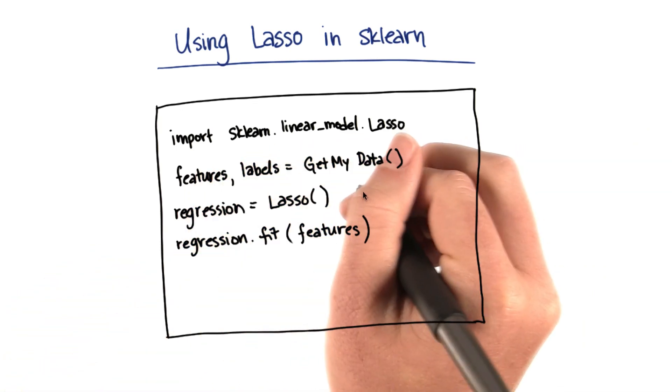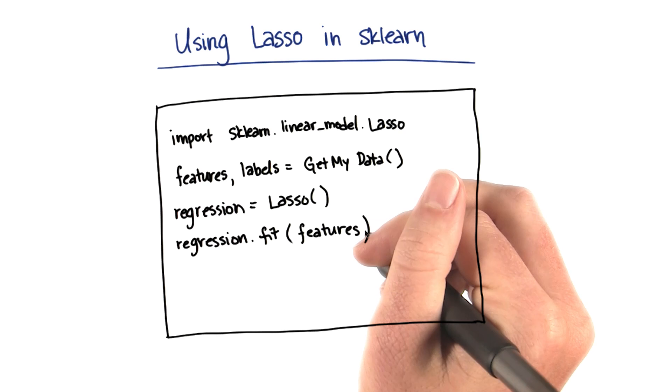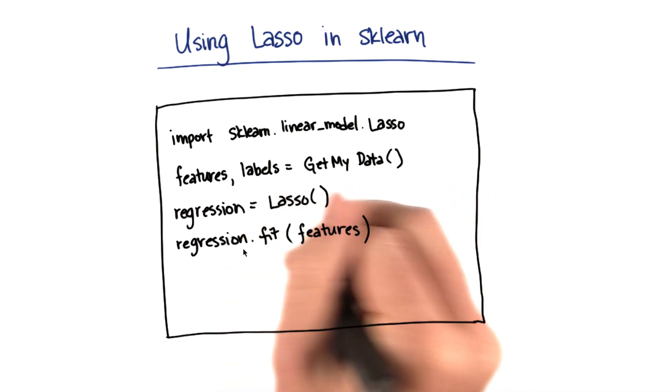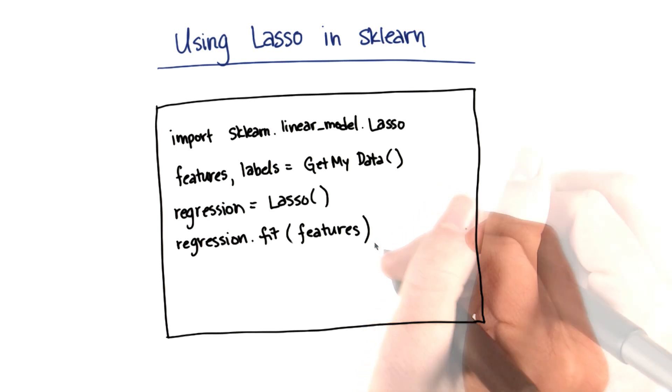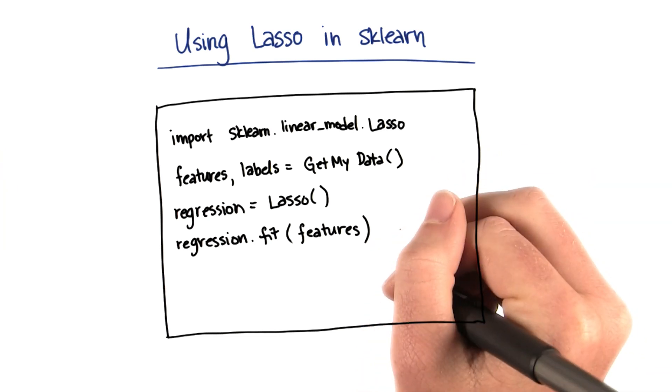The next thing I'm going to do is create my regression. So I just call lasso, open close parentheses. And then the next thing that I do is I try to fit my regression using the features that are available to me. But then when I run this code, it throws an error, and I'm trying to figure out why.